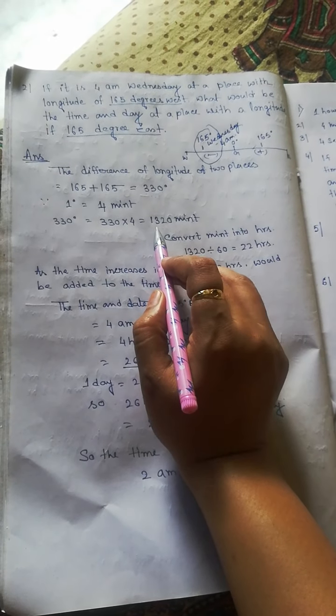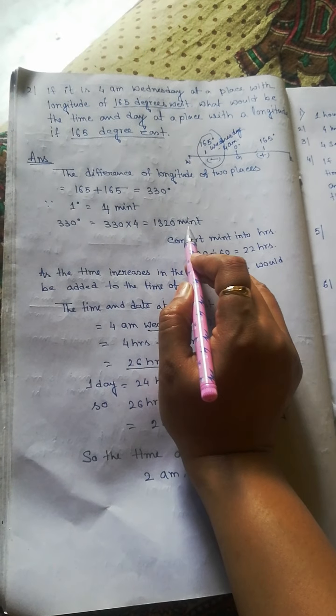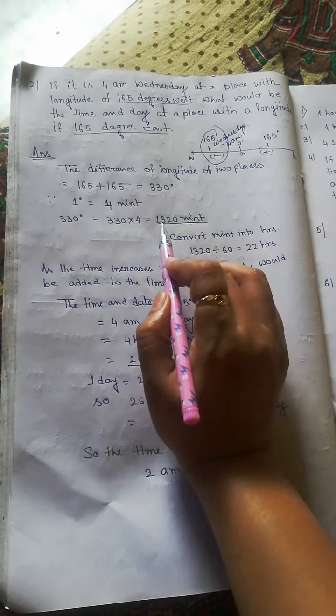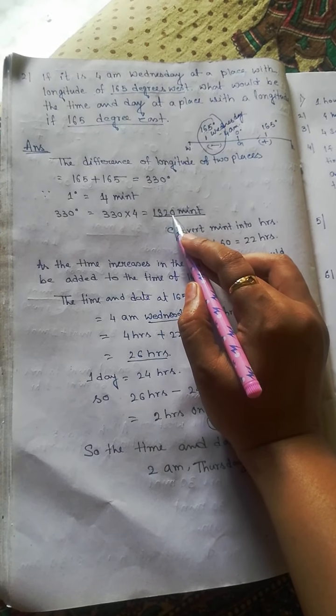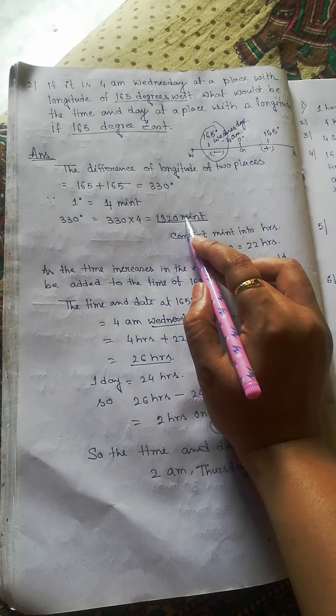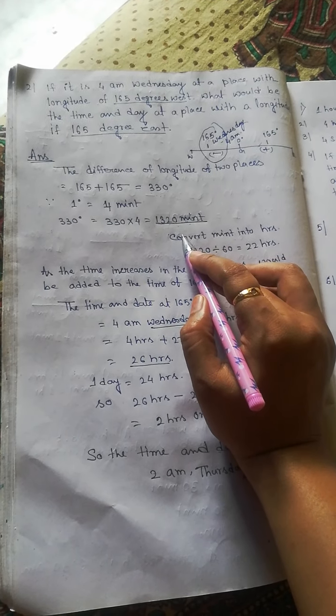Now you already got this minute, so you convert this minute into hours. That means you have to divide by 60. So if you divide 1320 divided by 60...